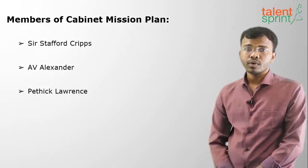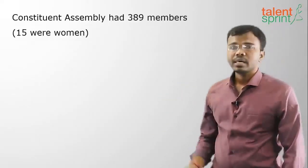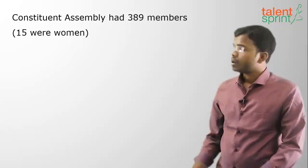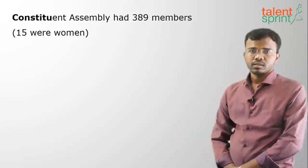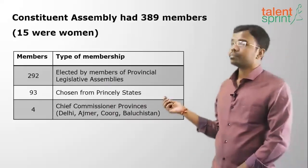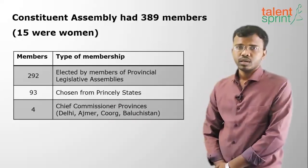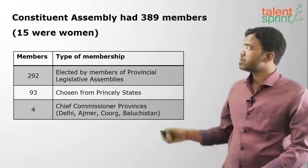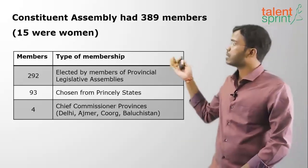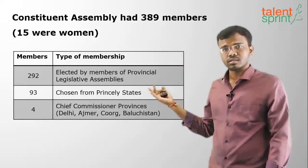The Constituent Assembly had 389 members, out of which 15 were women. Out of the total 389 members, 292 were elected by the members of provincial legislative assemblies — the provinces ruled by the British. These were indirectly elected members.